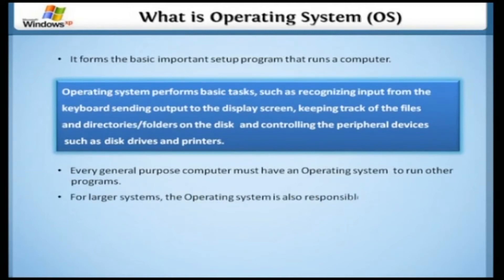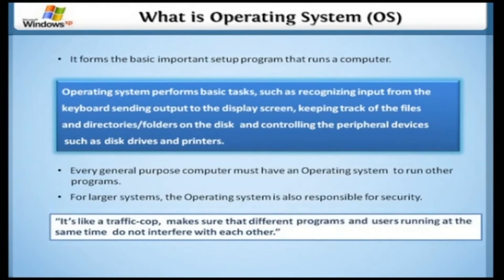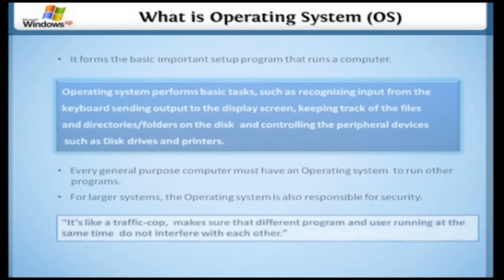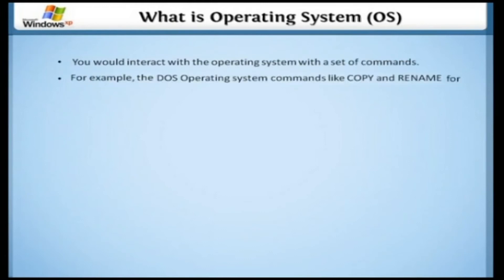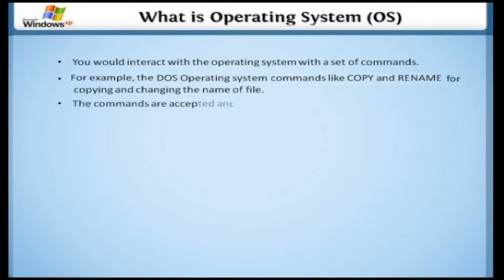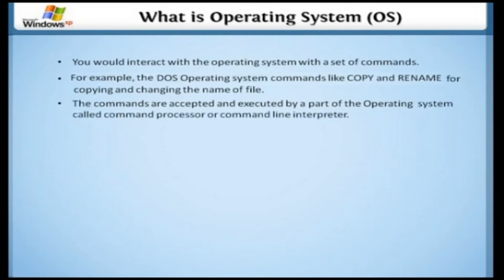Every general purpose computer must have an operating system to run other programs. For large systems, the operating system has even greater responsibilities and powers. The operating system is also responsible for security, ensuring that unauthorized users do not access the system. It's like a traffic cop — it makes sure that different programs and users running at the same time do not interfere with each other. You will interact with the operating system through a set of commands. The commands are accepted and executed by a part of the operating system called the command processor or command line interpreter.